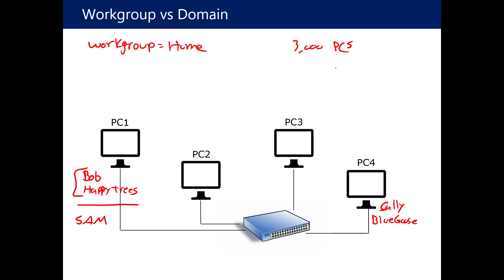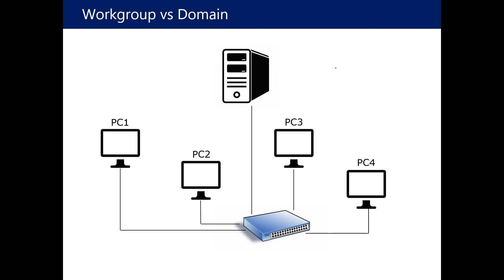So what all companies will run is a domain-based environment. A domain-based environment builds on this by adding a domain controller — a Windows Server that functions as a domain controller, always called a DC. A domain controller is nothing but a Windows Server — this could be Windows Server 2019, 2016, 2012, 2008. Any Windows Server operating system has the ability to be a domain controller. A domain controller is nothing but a server that you install this software called Active Directory.